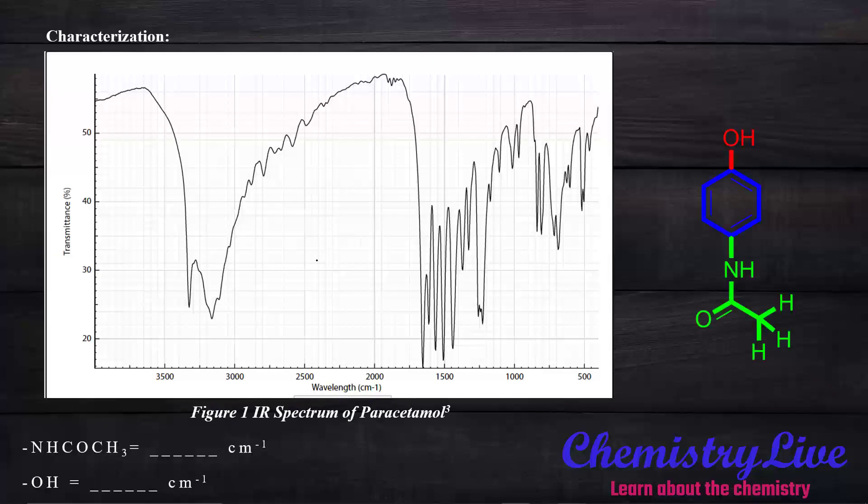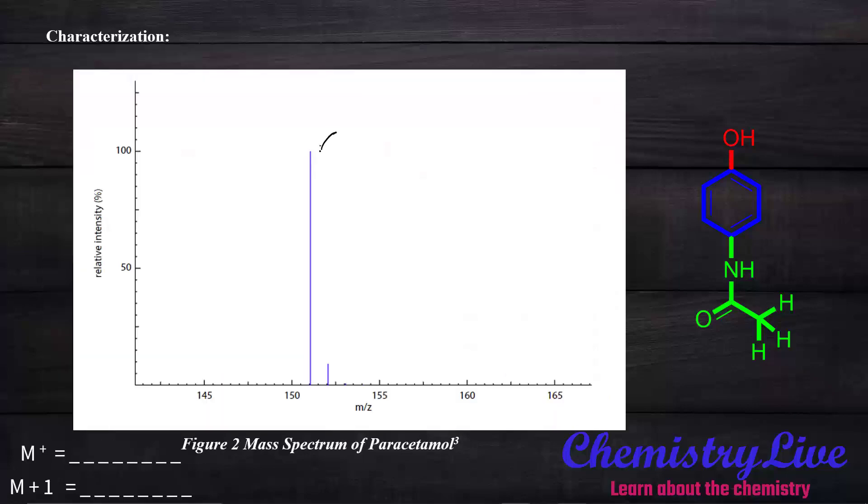Now we switch to the characterization table. First, the IR spectrum. In the IR spectrum of paracetamol we get two peaks, one at 3200 and another at 3300 cm⁻¹. There is another peak at 1700 cm⁻¹. This confirms the presence of NHCOCO and OH functional groups. The mass spectrum shows peaks at 151 and 152, which are the M+ peak and M+1 peak, confirming the synthesis of paracetamol.